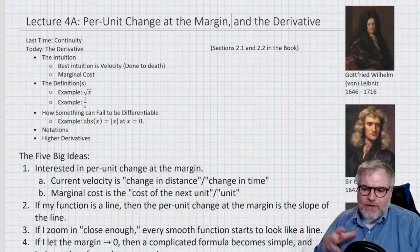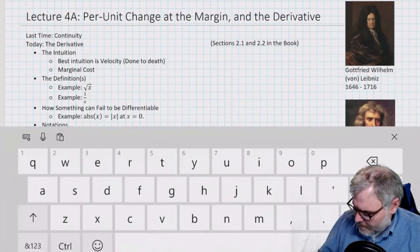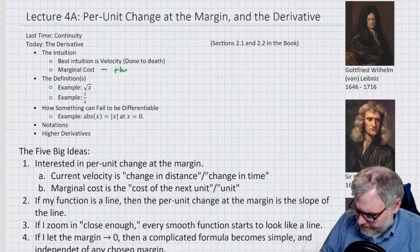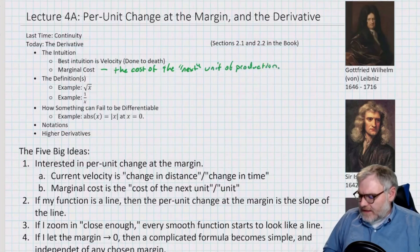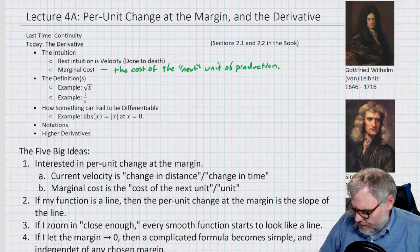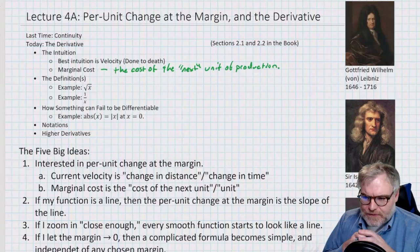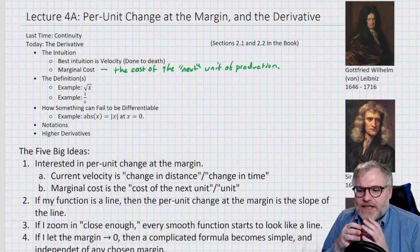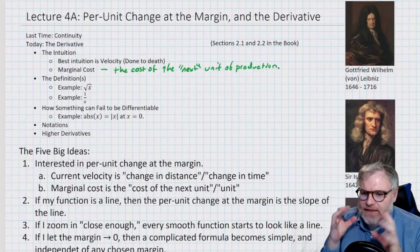We're going to have forward-looking marginal cost — this is going to be the cost of the next unit. This is section 2.1 and 2.2 in the book. We're going to stick with this marginal cost and do a whole bunch of examples, spending most of the time on Excel playing with marginal cost.